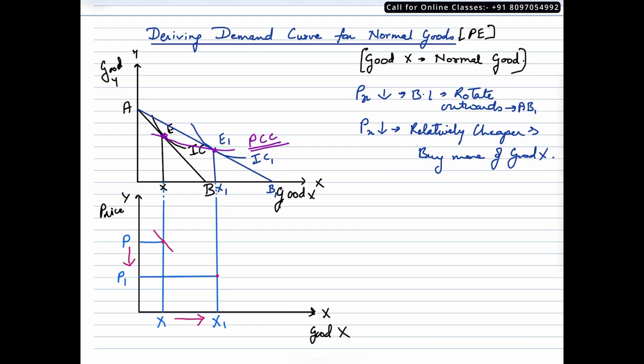we get a demand curve which is a downward sloping curve. This is how we will be able to derive a demand curve for normal goods, for normal goods under indifference curve analysis approach. Now we need to remember